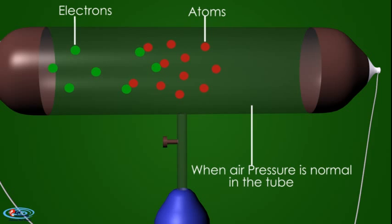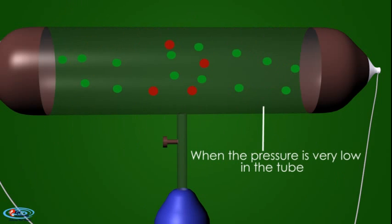When the gas pressure is very low, there are few gas atoms in the discharge tube. As such, there is no hindrance to the movement of electrons and gas conducts electricity.